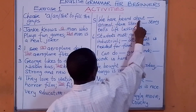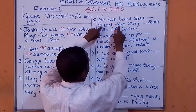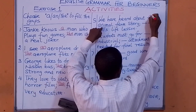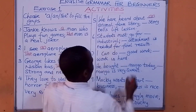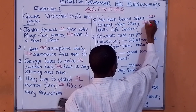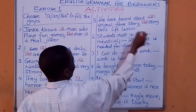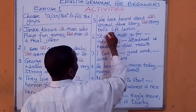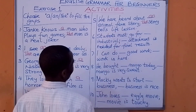Number 5: We have heard about an animal farm. The story tells life lessons.